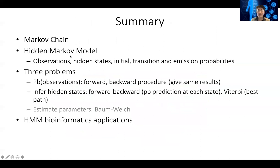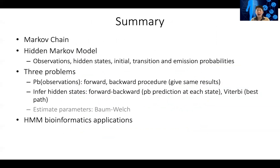In summary, Markov chain and especially hidden Markov chain are very, very useful. The models in the hidden Markov model include the observations — like the coin flip — and the hidden states, which are the coins being used. There's an initial probability, which is the likelihood you start with a given state; the transition probability, which is the likelihood of changing between coins; and the emission probability, which is the likelihood of seeing the observation under the hidden states. There are three problems that we explain the solutions for.